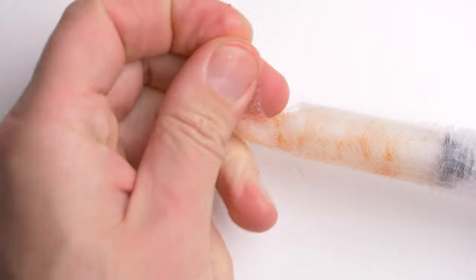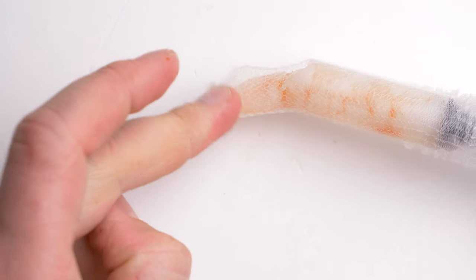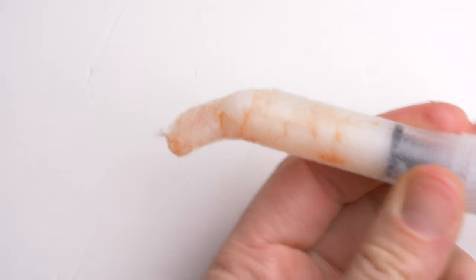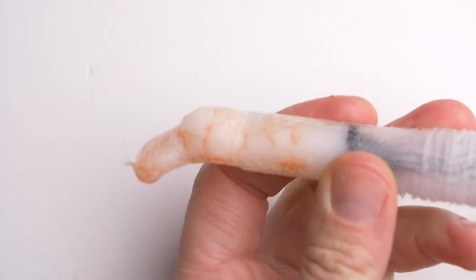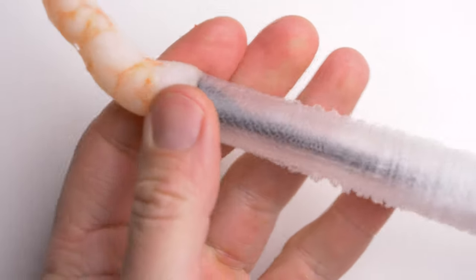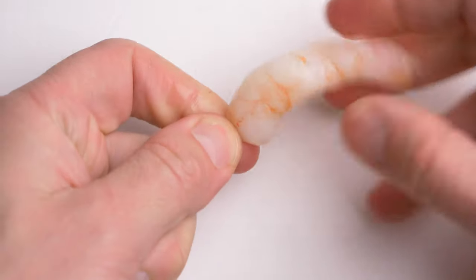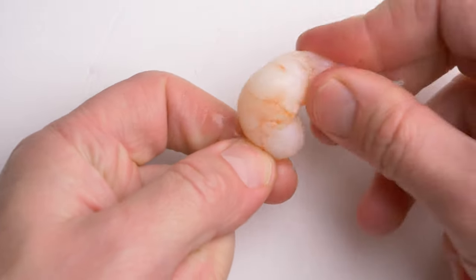Of course, there should be a knot at the end of the mesh. Right, the prawn is in the mesh, as you can see.